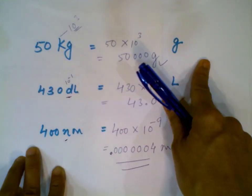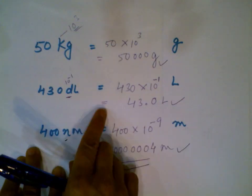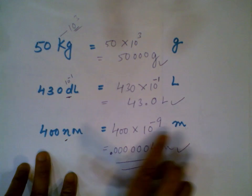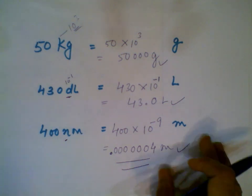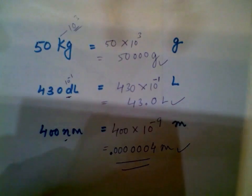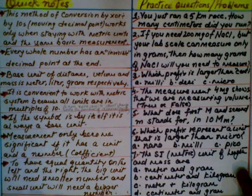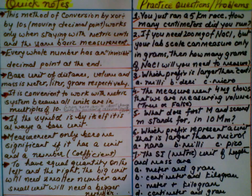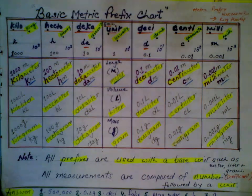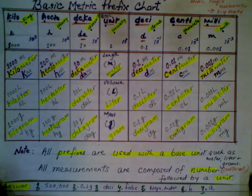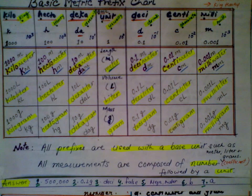Second, you must stay within the same base unit — for example, grams to grams, liters to liters, meters to meters. You can't mix types of measurement. Those are the limitations of this technique. Please take time to read the notes and practice problems provided to check your understanding. I'm also including a basic prefix chart. I hope this video was helpful — thank you for watching.